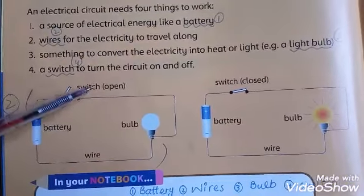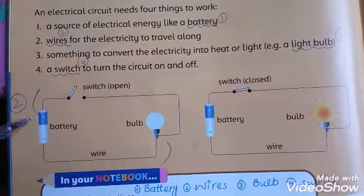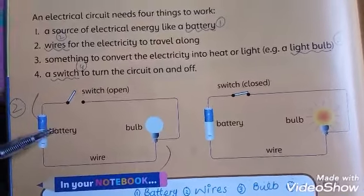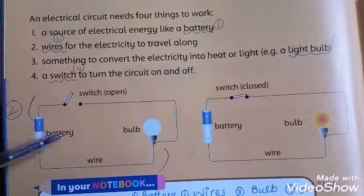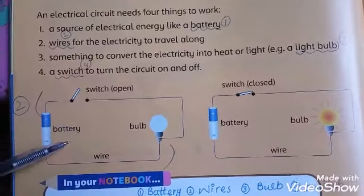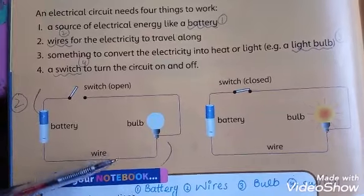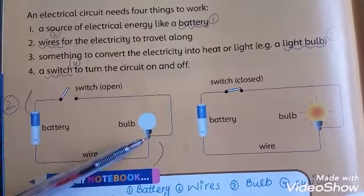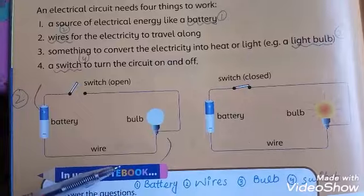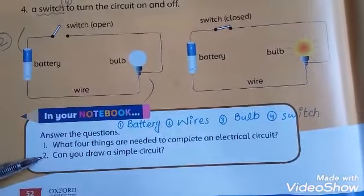An electrical circuit needs four things: battery, switch, bulb, and wire. These are the four important things needed to complete a circuit. The battery provides electrical energy, wires allow electricity to travel along, the bulb provides lighting, and the switch turns the circuit on and off.